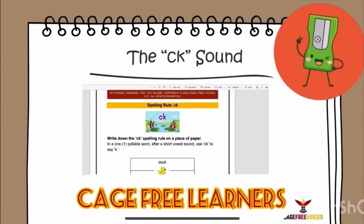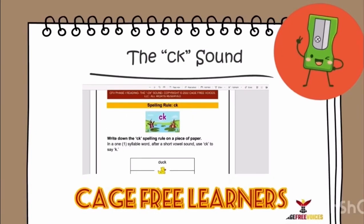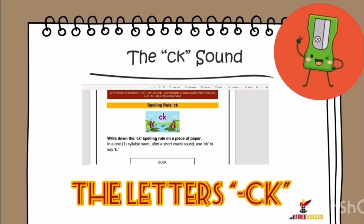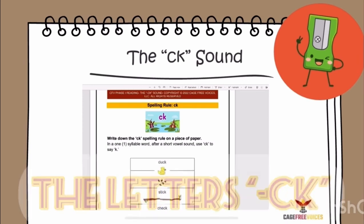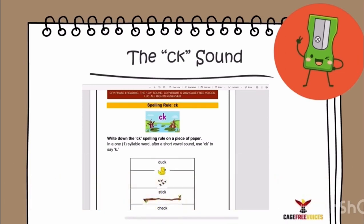All right, Cage Free Learners! Today we're going to be talking about the letters C and K. When C and K are together, guess what? They make the K sound. That's right, C and K together make the K sound. What sound does C and K make together?